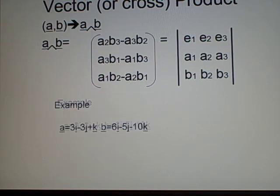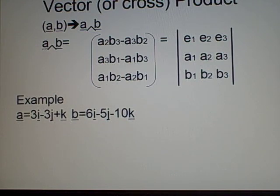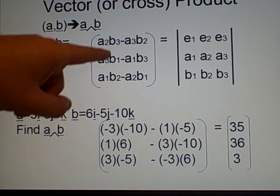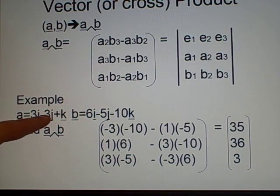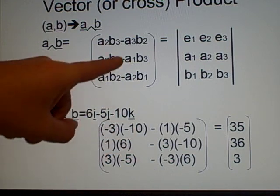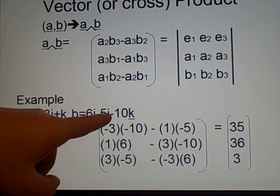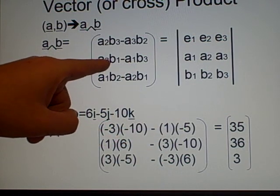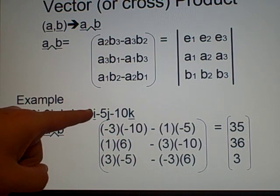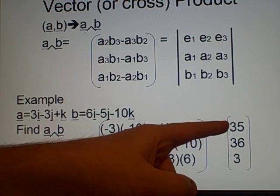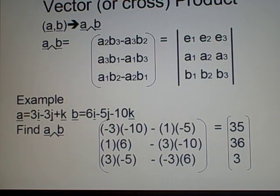I've got an example for this. It's the same vectors again. And we want to find the cross product of it. Now, again, it's a massive big matrix. A lot are working, really, but not too much. So we have a2b3, a2, which is minus 3, times b3, minus 10, minus a3b2. a3 is 1, b2 is minus 5. a3b1, 1 times 6, and so on. And this will give you the answer. Hopefully. That's what I got. 35, 36, 3.